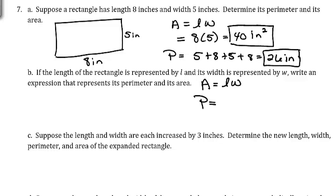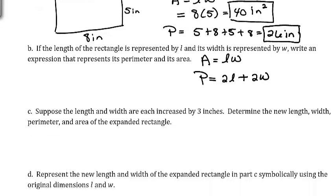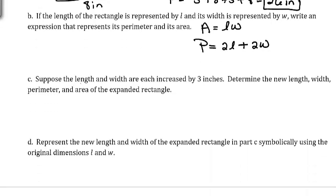These are the symbolic representations for the area and perimeter of a rectangle. Now suppose the length and the width are each increased by 3 inches — determine the new length, width, perimeter, and area of the expanded rectangle.